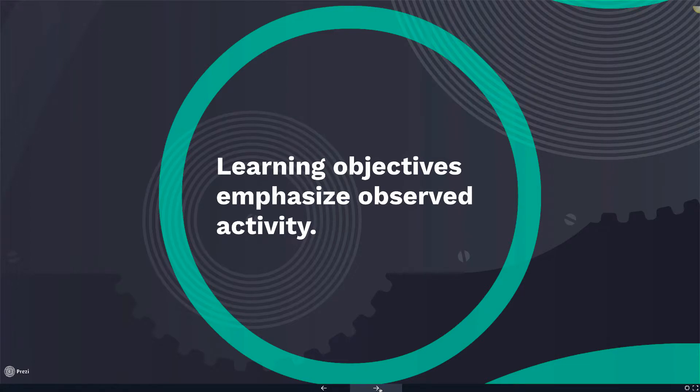Learning objectives emphasize observed activity. The only way you can determine whether or not a student has learned something is to observe some kind of behavior that indicates learning has taken place. This behavior may range from correctly answering multiple choice questions.